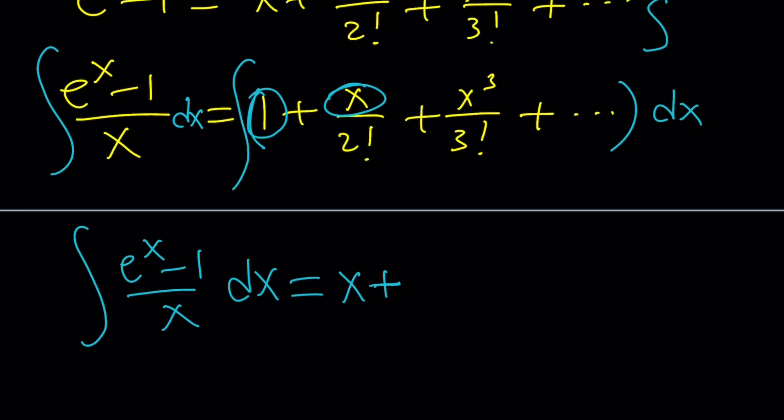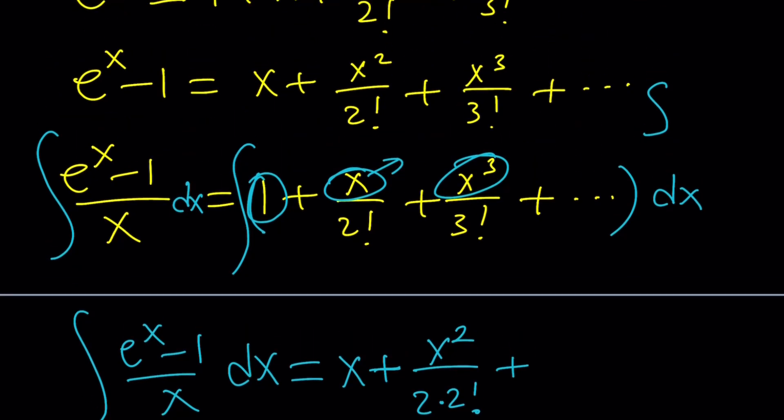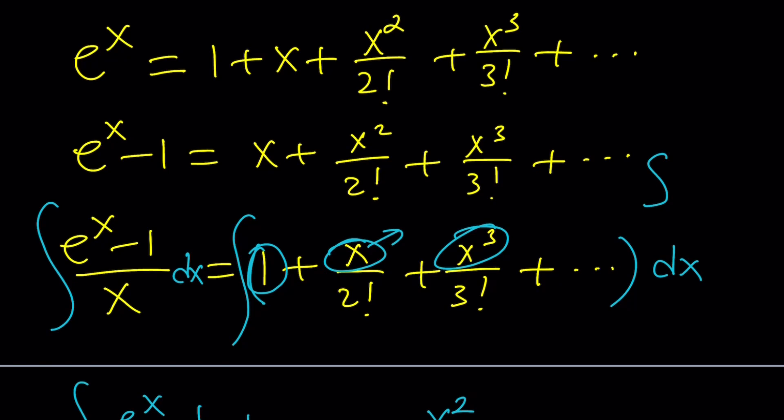Now, where am I? Okay, we're integrating. So, the integral of x is x squared divided by 2, but there is another number, 2 factorial, so we kind of need to multiply them at the bottom. Integral of this is going to be, wait a minute, it's not x cubed. It's supposed to be x squared over, what did I do?